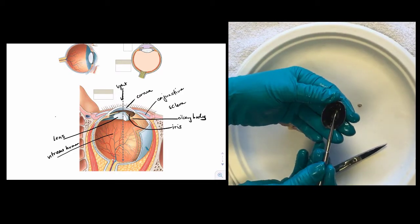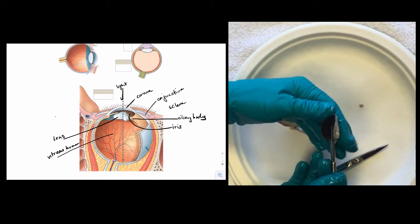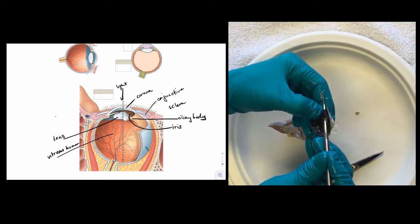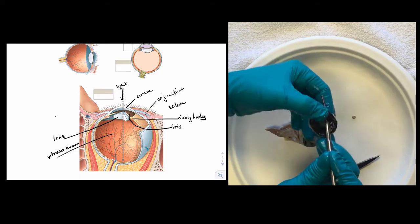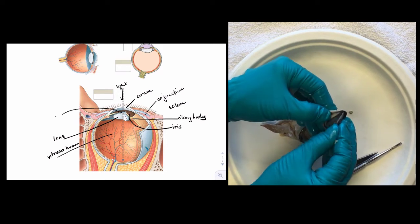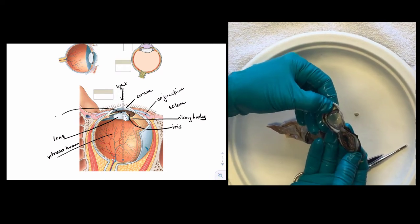Use a blunt probe to remove the iris from the back of the sclera and cornea. Pull the iris off and take a look at its features.